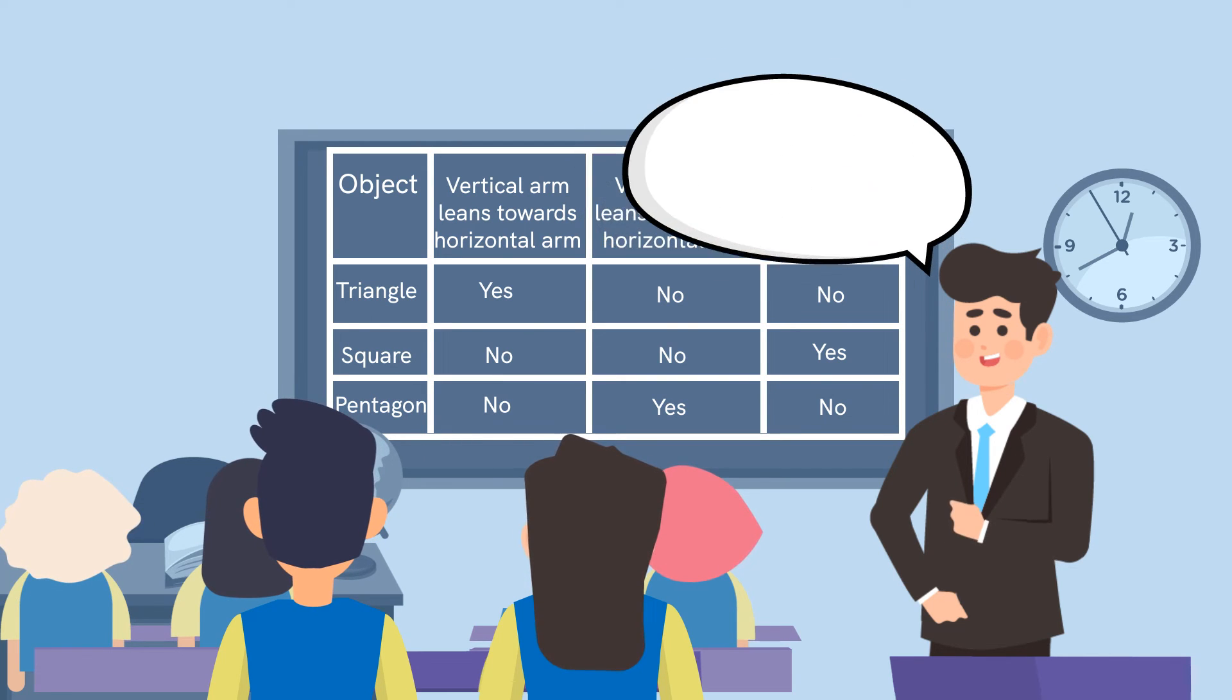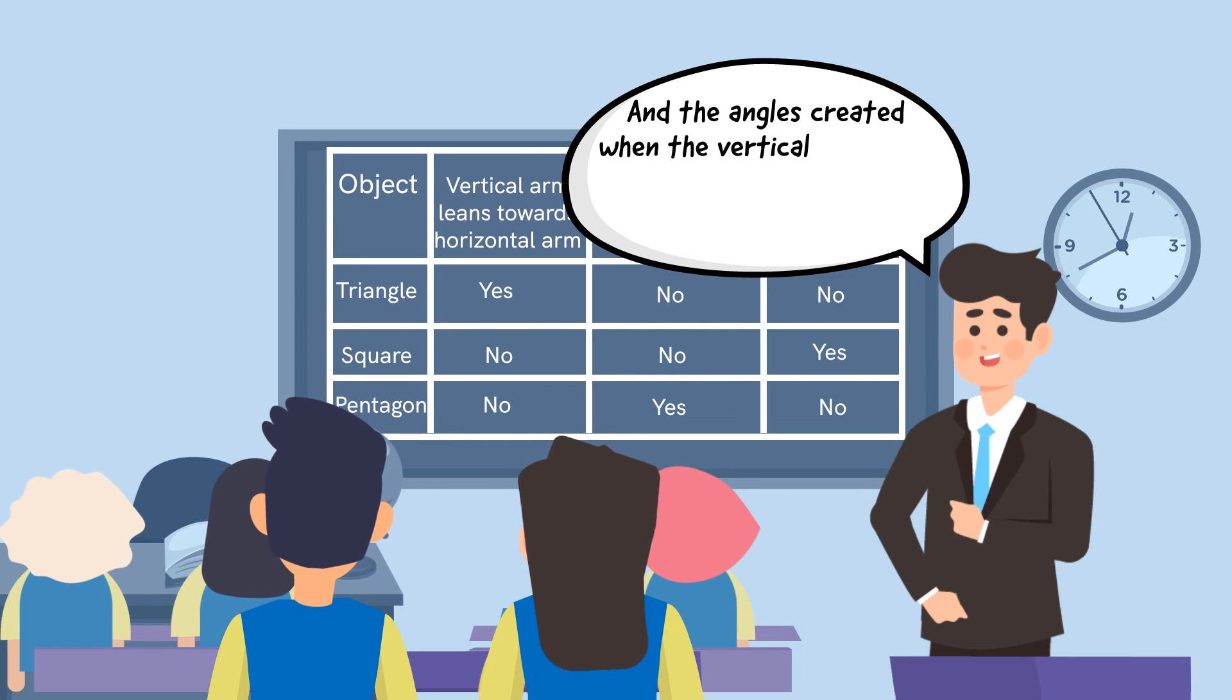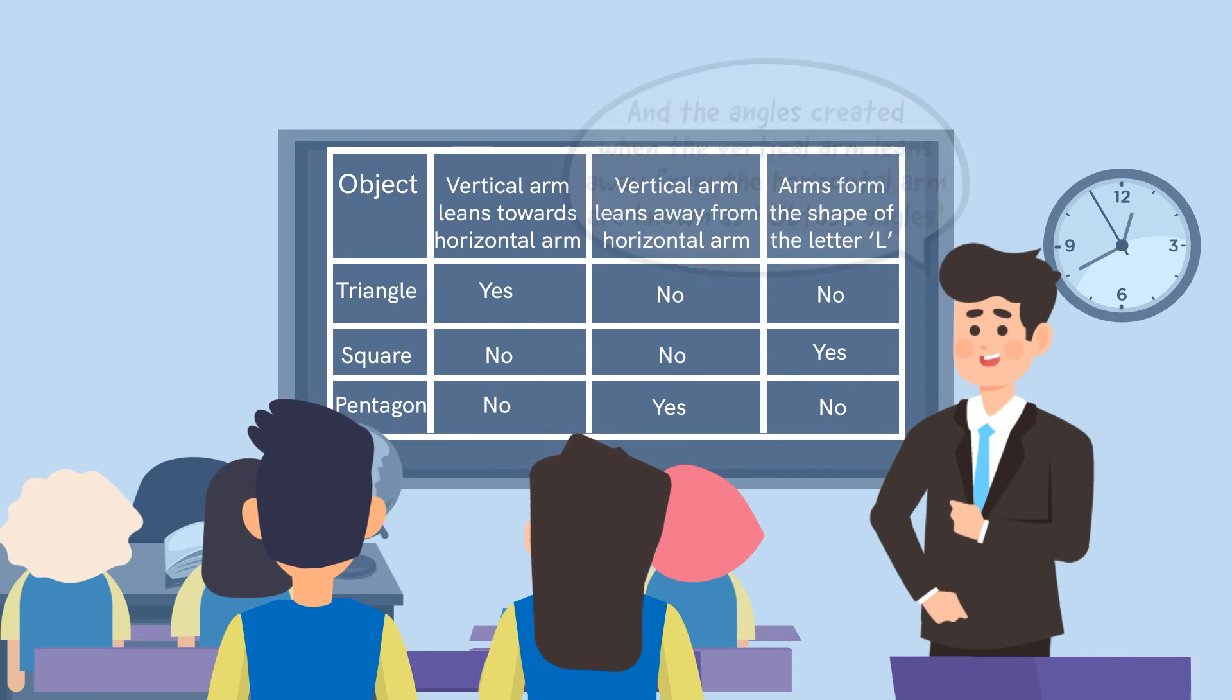And the angles created when the vertical arm leans away from the horizontal arm are known as obtuse angles.